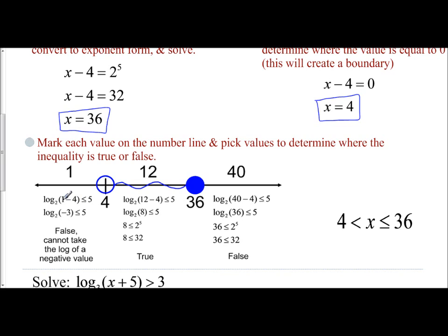If I were to plug in 1, 1 minus 4 is negative 3, and that means it's false, because you cannot take the log of a negative value. If I were to plug in 12, 12 minus 4 is 8. Convert this. 8 is less than or equal to 2 to the 5th. So is 8 less than or equal to 32? Yes.